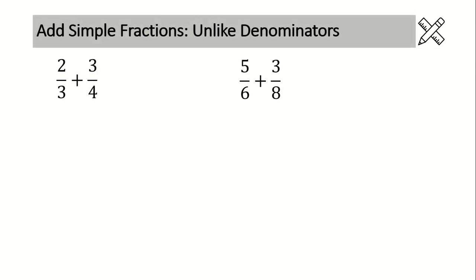We can only add and subtract fractions with like denominators. In all of the questions today, we have denominators that are unlike — they are not common, they are not the same. So we need to start off by finding a common denominator. As always, we're working down the page, so we put an equal sign right here and rewrite our question with no numbers. Step one is to figure out the common denominators.